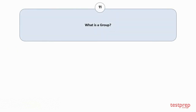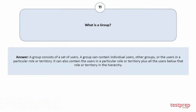Question number eleven: What is a group? A group consists of a set of users. A group can contain individual users, other groups, or the users in a particular role or territory. It can also contain the users in a particular role or territory plus all the users below that role or territory in the hierarchy.